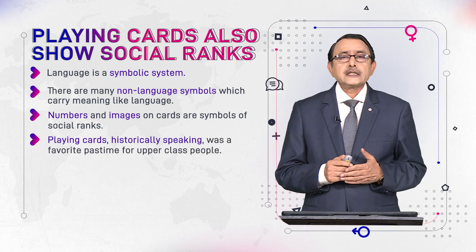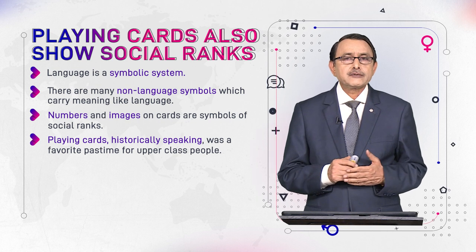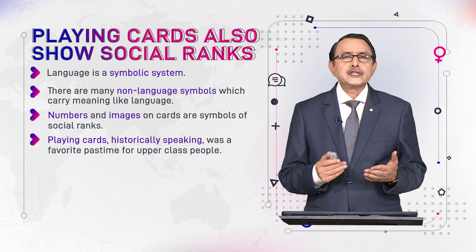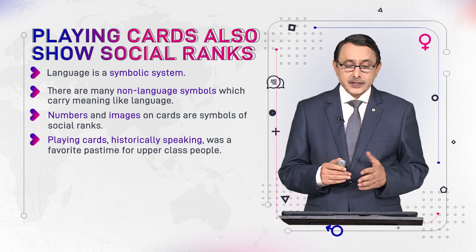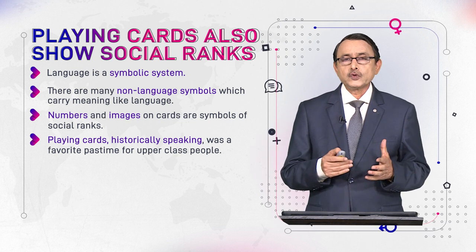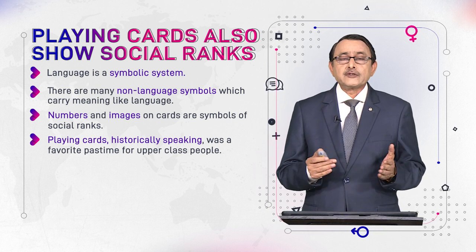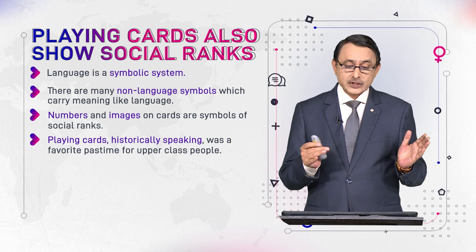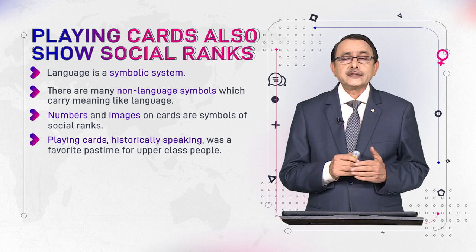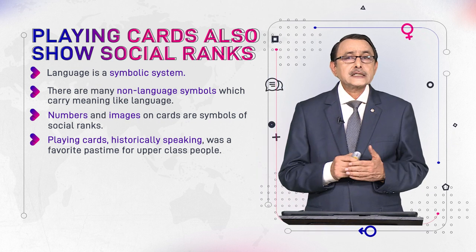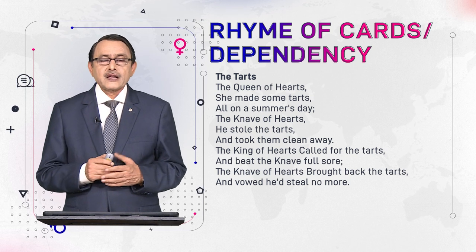Playing cards are historically linked with elite class people but these days everybody plays cards. Having this brief introduction to playing cards and the symbols they carry, now we come to our topic — how they show men. These are printed images on the cards; here we have a king and queen. See what type of image they create in our mind — a symbol of power. Similarly, the cards are numbered and they show ranks. This is the rhyme about playing cards, about the tarts — a burger-like thing filled with fruit.